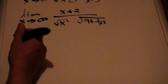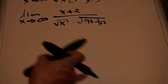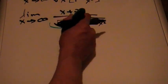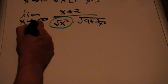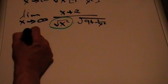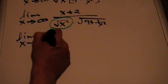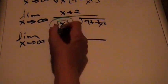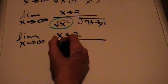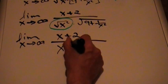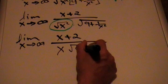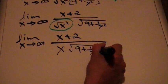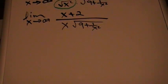Now we know that √(x²) equals x, so it can cancel with the x in the denominator. We end up with the limit as x approaches infinity of (x + 2) over x times √(9 + 1/x²).